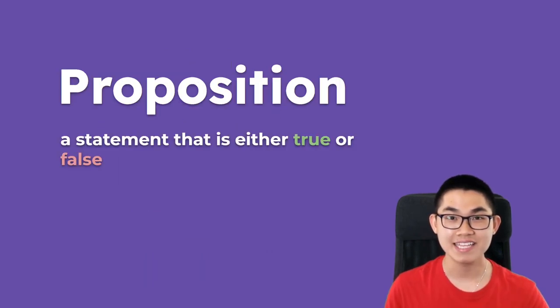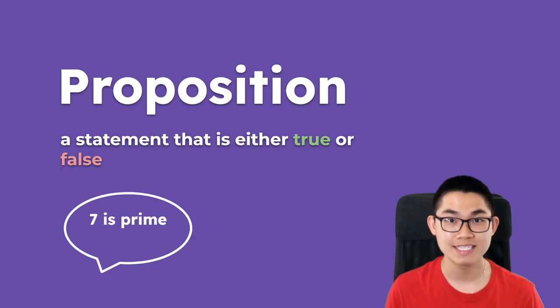Let's start at the most basic level, which is the proposition. So a proposition is just a statement that is either true or false. So for example, 7 is a prime number is a statement which is true, so it is a proposition.